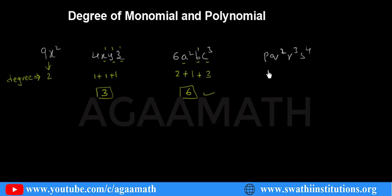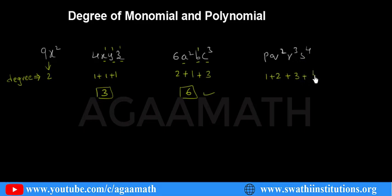The degree of monomial means adding all the powers of the variables. Here the power of p is 1, q is 2, r is 3, and s is 4. So add them: 1 plus 2 plus 3 plus 4 equals 10. The degree of pq²r³s⁴ is 10.